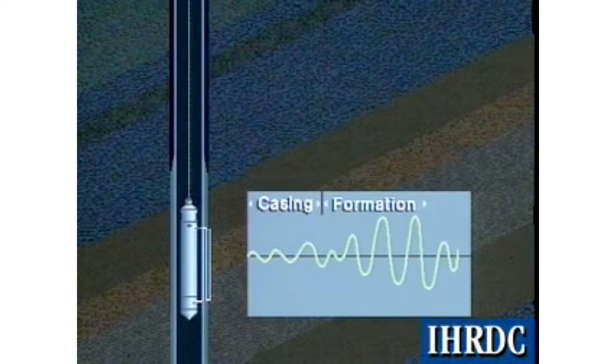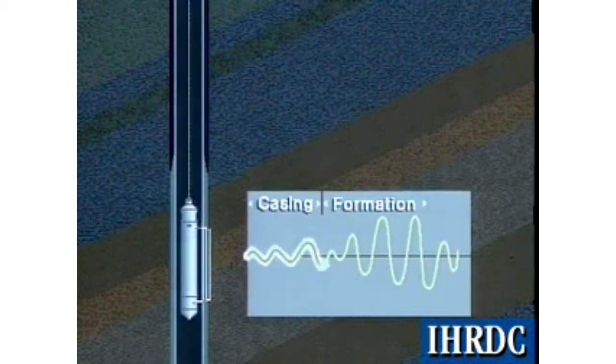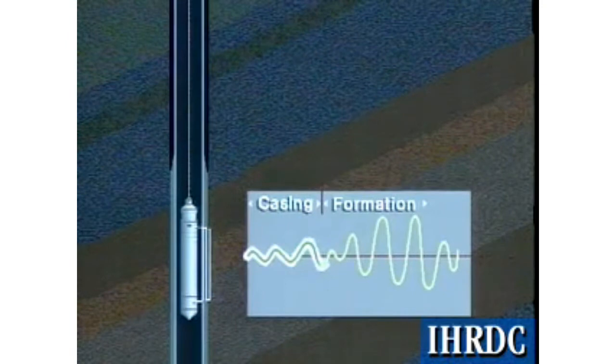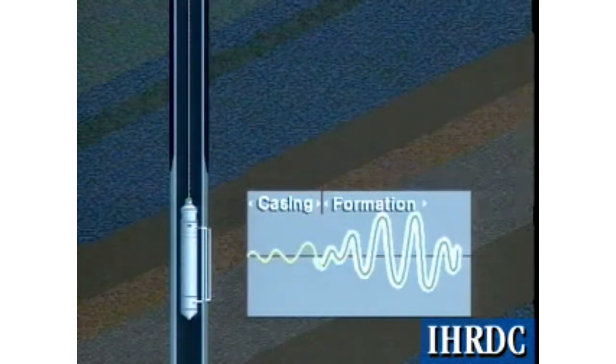The effect of a good cement job on the received signal is to cause the pipe portion of the signal to be weak, while the formation portion is strong.